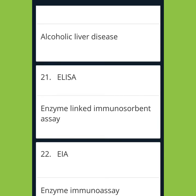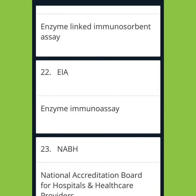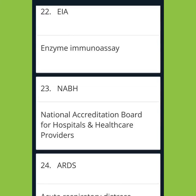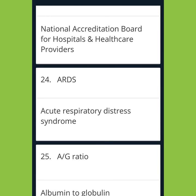ELISA: Enzyme Linked Immunosorbent Assay. EIA: Enzyme Immunoassay. NABH: National Accreditation Board for Hospitals and Healthcare Providers. ARDS: Acute Respiratory Distress Syndrome. AG Ratio: Albumin to Globulin Ratio.